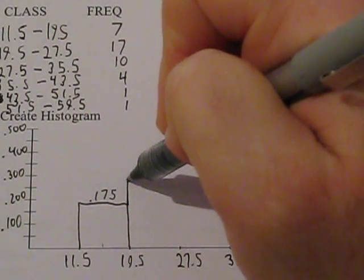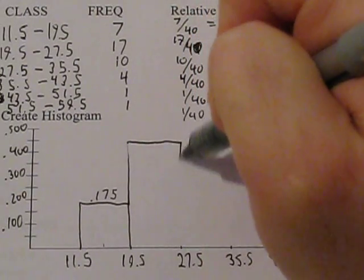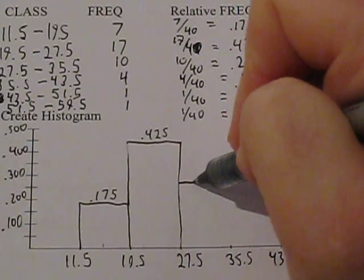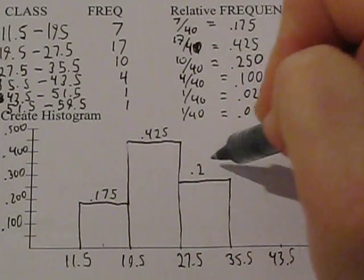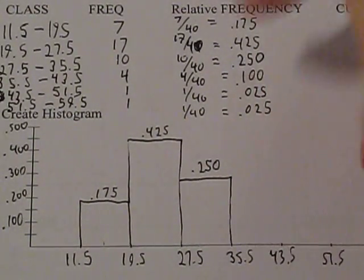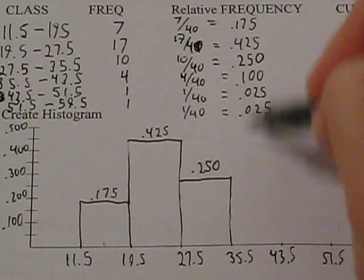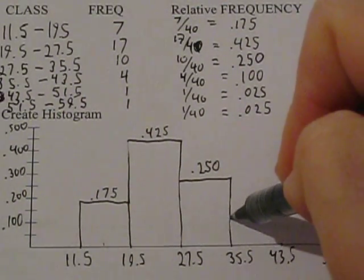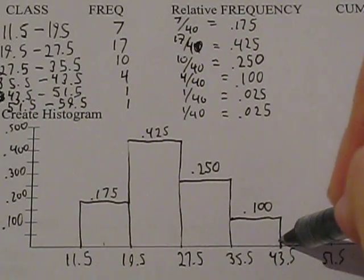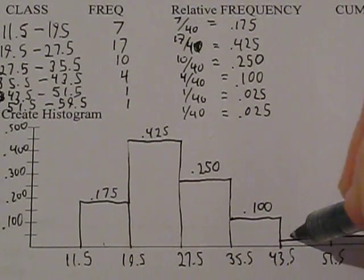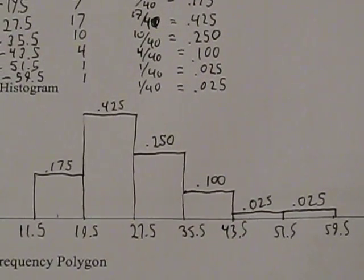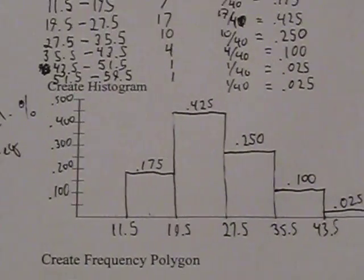This next bar is going to be 0.425. This one is 0.250 or 25%, meaning 25% of the fast food is between 27.5 and 35.5 grams of protein. Then we move to the next level at 0.100, and finally our last two bounds are 2.5% or 0.025. And there we have our relative frequency histogram. Looking good.